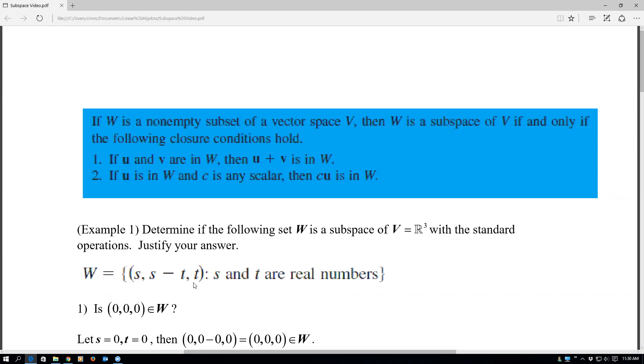So things in that set might look like, for instance, if S was one and T was zero, we would have (1, 1, 0) in there. If S was zero and T was one, we would have (0, -1, 1) in there. So things that look like that would be in our subspace.